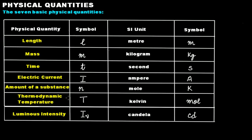Luminous intensity deals with light. These are called basic physical quantities because all other physical quantities have their SI units derived using the SI units of these seven quantities.